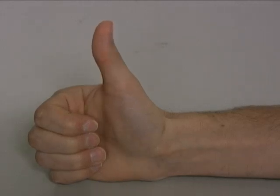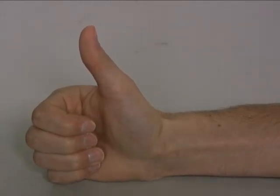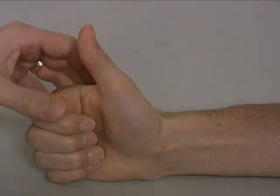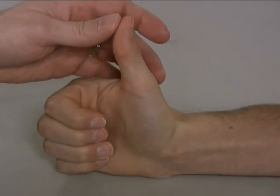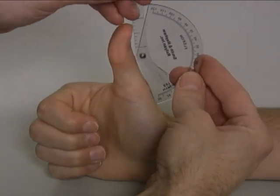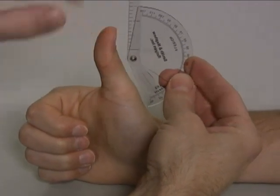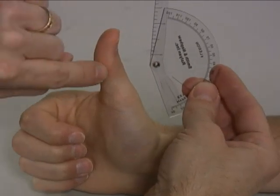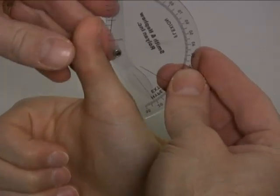To measure thumb intraphalangeal joint extension to flexion, patient is seated at the table. The thumb is extended to begin with. The goniometer is simply placed on edge on the back of the thumb with the axis of the goniometer lined up with the intraphalangeal joint.